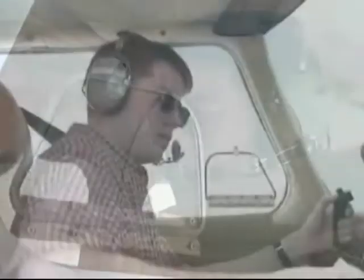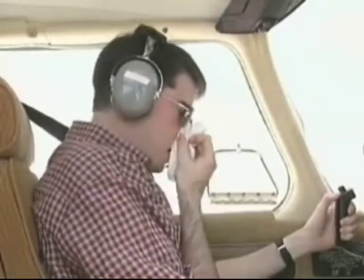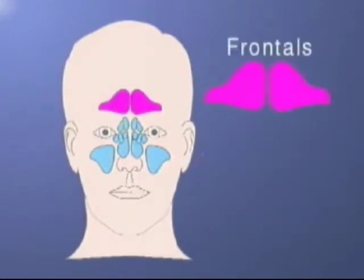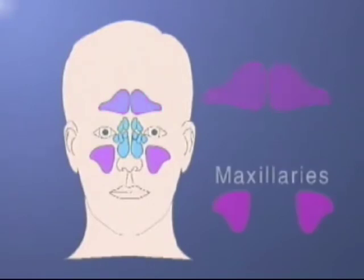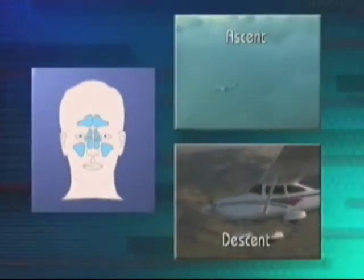A similar trapped gas problem can be experienced when an individual's sinuses cannot equalize the air pressure changes due to sinus duct blockage, commonly caused by colds or allergies. This illustration shows the anatomy of the sinuses. The most commonly affected sinuses are the frontals and maxillaries, and they can cause trouble on both ascent and descent.